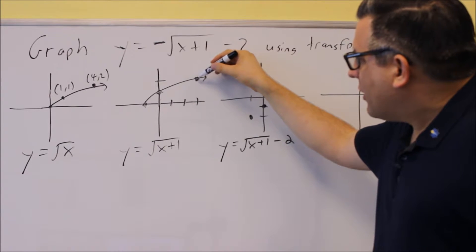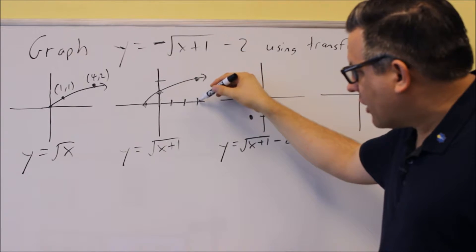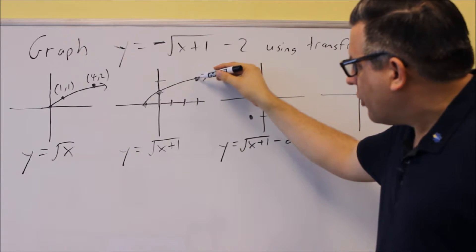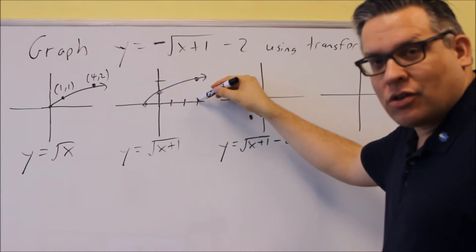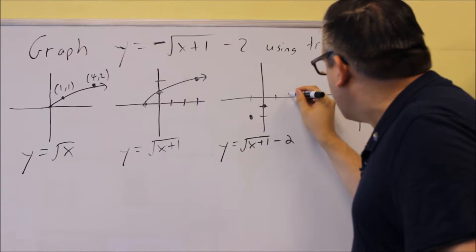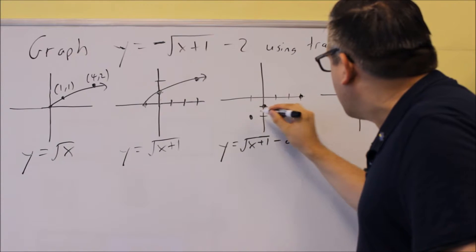And then this point over here that was at 4, 2, or at 3, 2 rather, that's now going to cross here at 3, 0. So we can put that one over here, and it goes through 3, 0.